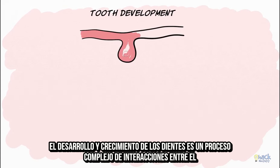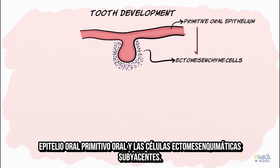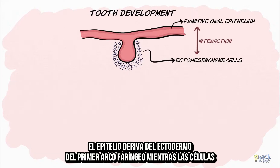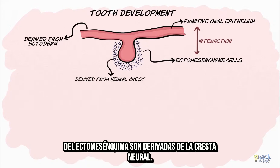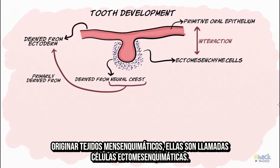The development and growth of teeth is a complex process of interactions between the primitive oral epithelium and the underlying ectomesenchymal cells. The epithelium is derived from the ectoderm of the first pharyngeal arch, while the cells of the ectomesenchyme are neural crest in origin. Since the neural crest cells are primarily derived from the ectoderm and eventually give rise to the mesenchymal tissues, they are called ectomesenchymal cells.